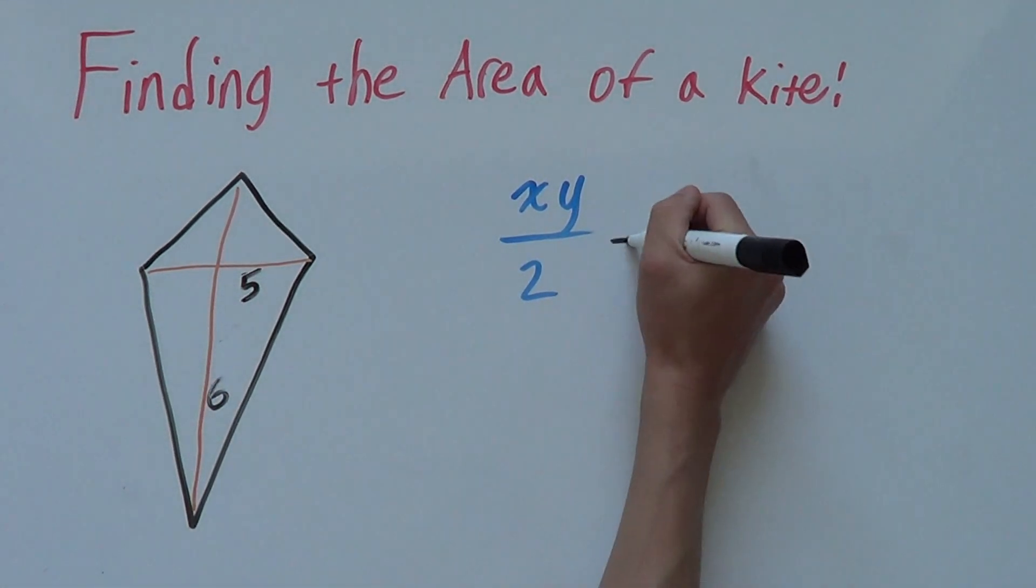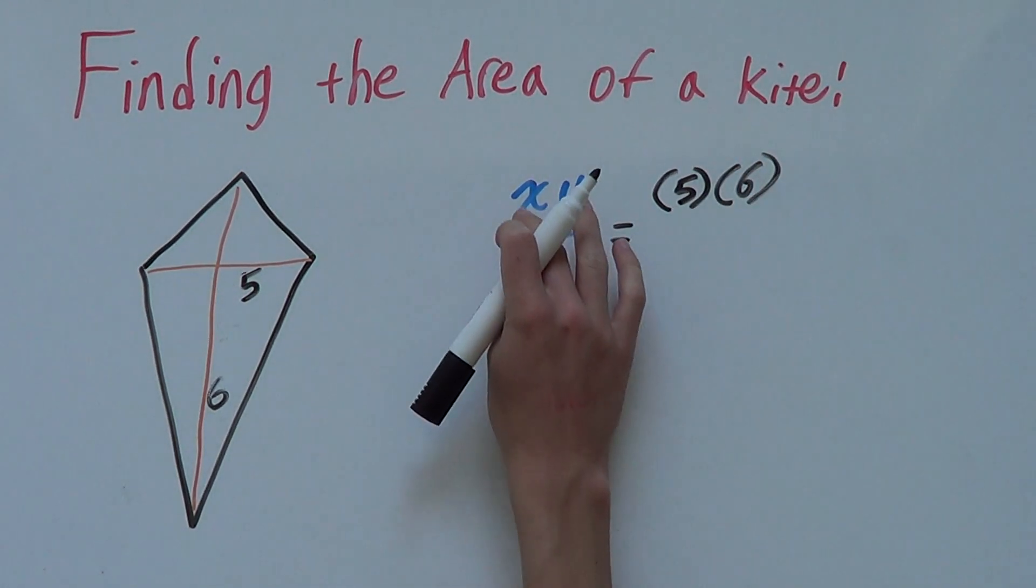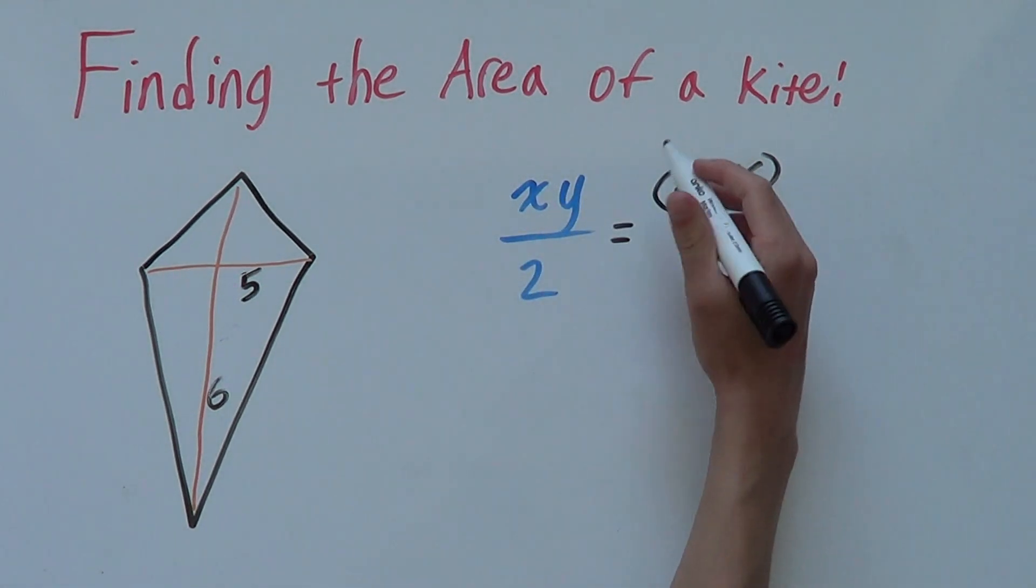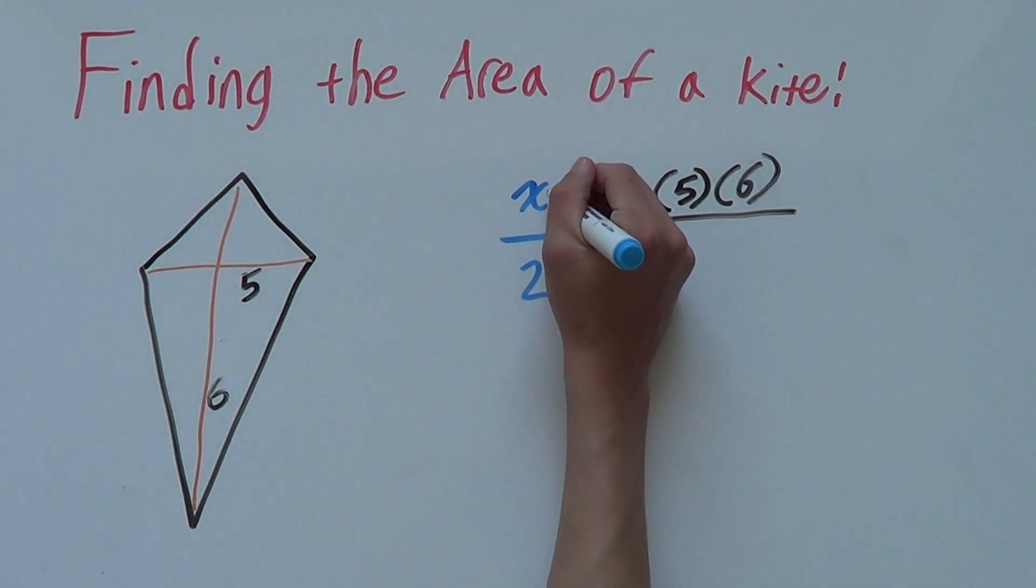So then, we'd have 5 and 6 once we substitute in x and y straight into here. And these are being multiplied by each other because there's like a hidden times symbol in there.